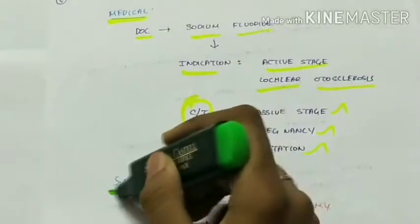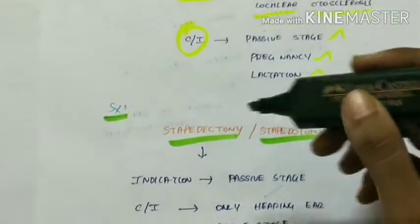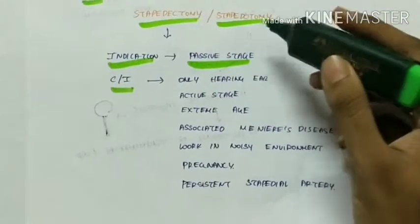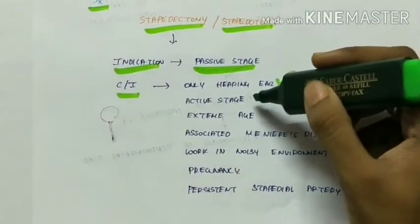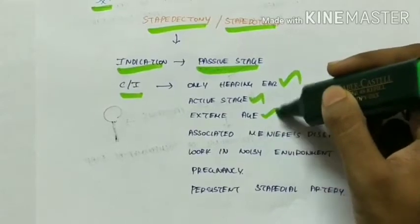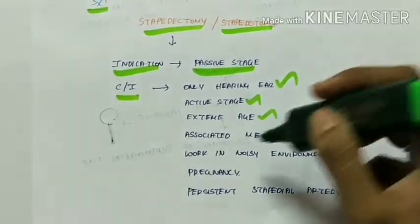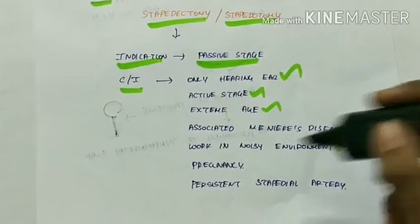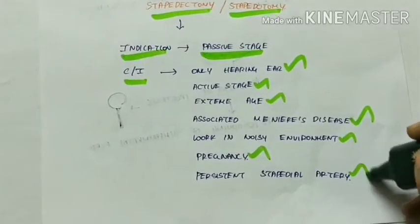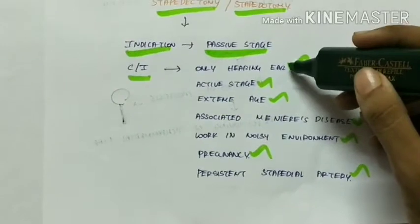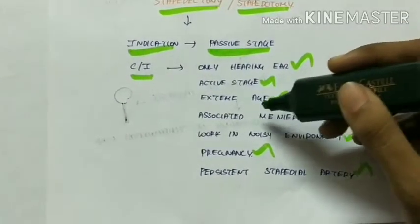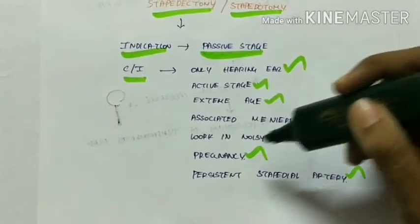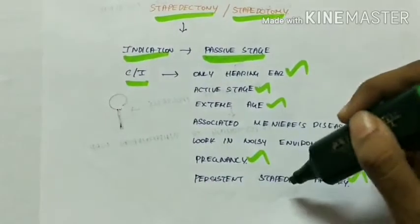Surgical management is by stapedotomy or stapedectomy, which is the treatment of choice. Stapedectomy involves removal of part of the stapes, while stapedotomy involves making a hole in the stapes. The indication for surgery is the passive stage of otosclerosis. Contraindications include: only hearing ear, active stage of disease, extremes of age, associated Meniere's disease, working in a noisy environment (as it can cause vertigo), pregnancy, and persistent stapedial artery.